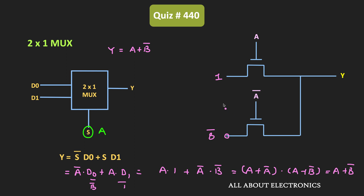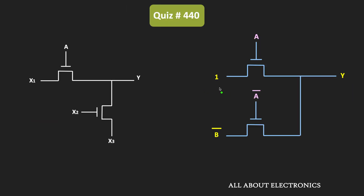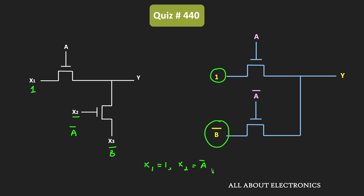Now let us see what should be the values of inputs x1, x2, and x3, and for that let us compare this circuit with the given circuit. To implement this function, one input should be equal to 1 while the other should be equal to b̄. So x1 should be equal to 1, while x3 should be equal to b̄. And this input should be equal to ā, meaning x2 should be equal to ā. So x1=1, x2=ā, and x3=b̄, and by using these inputs we can implement the function Y = A + B̄.